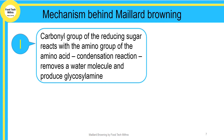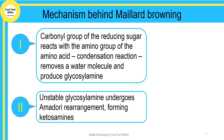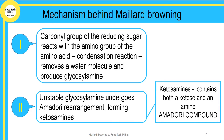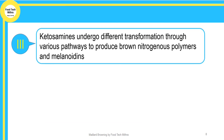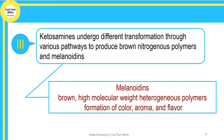Glucosylamine is highly unstable, so it immediately undergoes a rearrangement of molecules called the Amadori rearrangement, forming a product called ketoseamine. This ketoseamine contains both a ketose and an amine group and is called the Amadori compound. In the third step, ketoseamines undergo different complex chemical transformations and finally form a product called melanoidins — a brown nitrogenous polymer that is the main end product of the Maillard reaction.